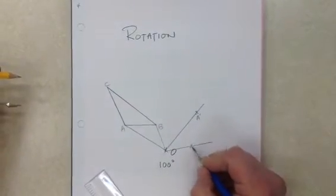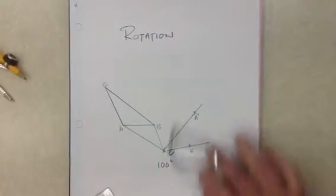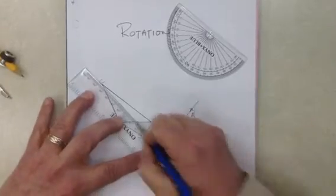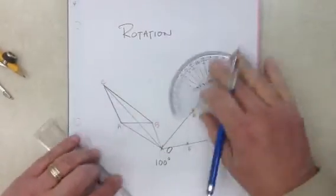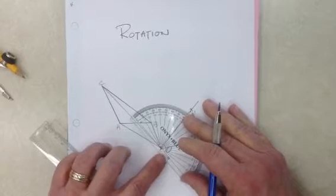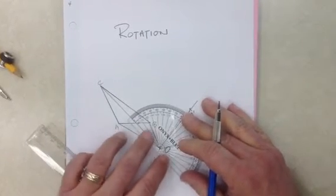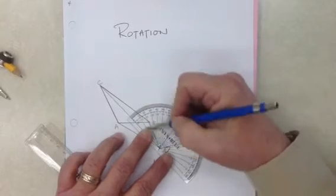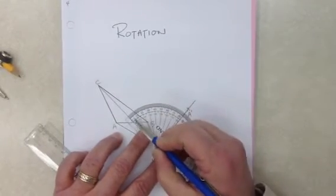I mark it clearly and label it as B prime. The last one, vertex C, I join O to point C. I take my protractor, vertex always at point O, and I have the zero on the line that I just drew, joining O to C. You can see there's the zero.